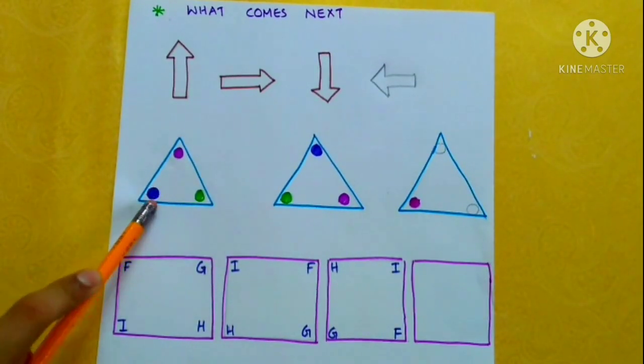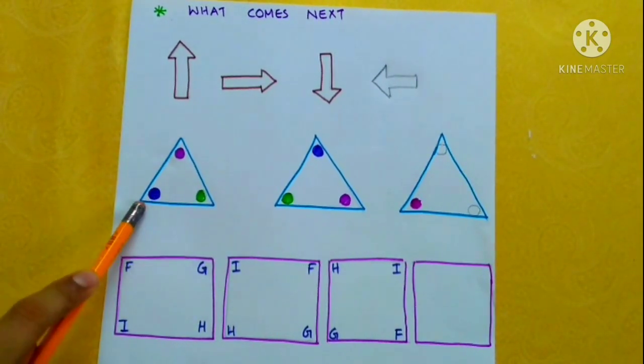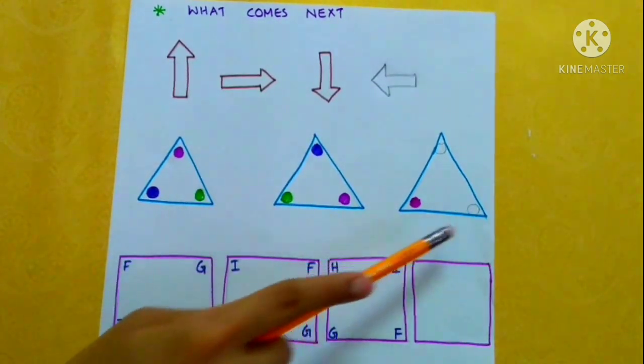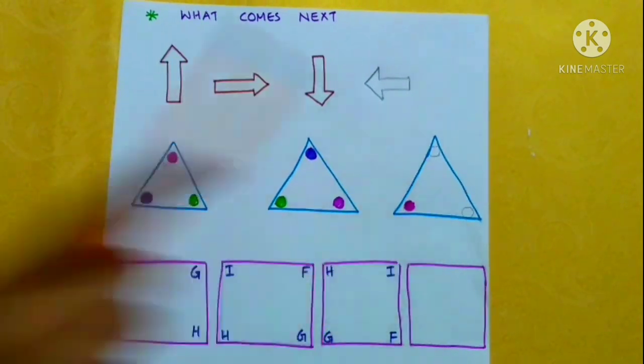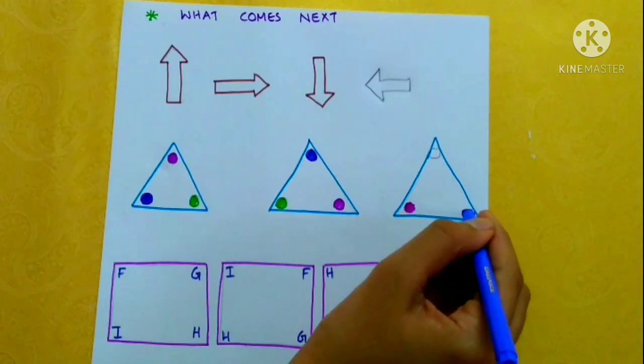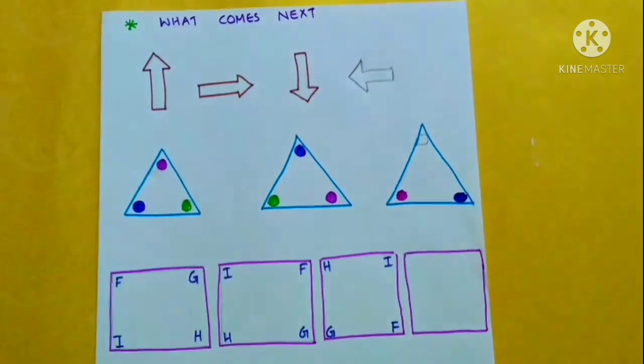Similarly, in the first figure, the blue dot is in this corner. In the second figure, the blue dot is in this corner. In the third figure, the blue dot will be in this corner. Similarly, green will come here.